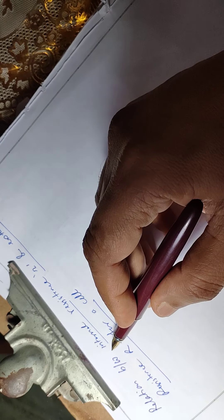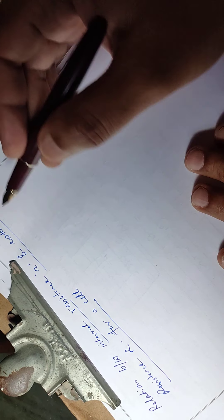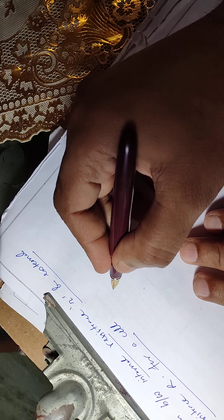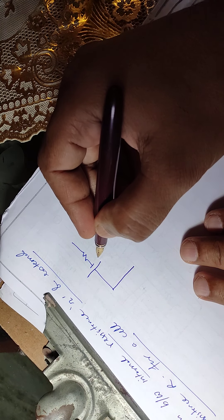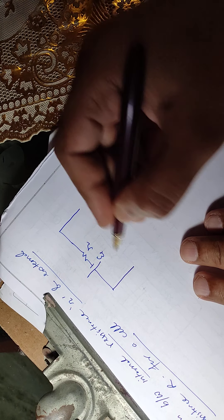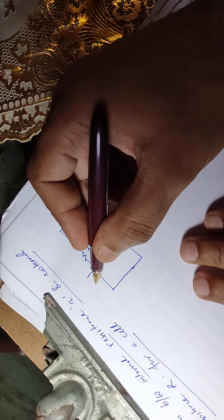Hello students. Now we are going to discuss the relation between internal resistance small r and external resistance capital R for a cell. Suppose you are having a cell whose EMF is xi and internal resistance is small r, and it is connected with external resistance capital R.